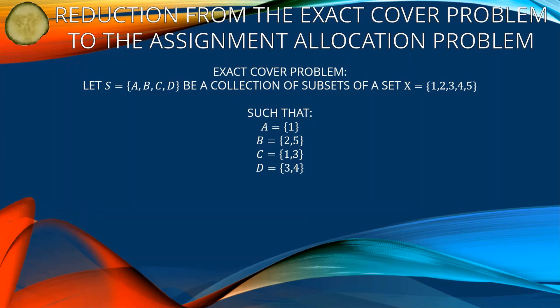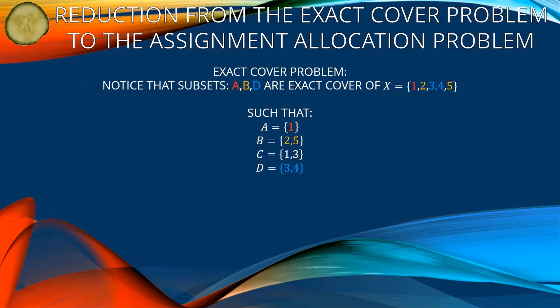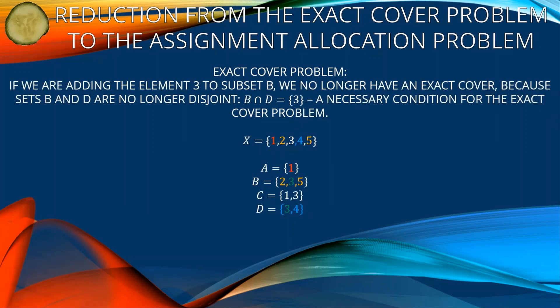Reduction from the exact cover problem to the assignment allocation problem. Exact cover problem: let s = {a, b, c, d} be a collection of subsets of set X = {1, 2, 3, 4, 5}, such that a = {1}, b = {2, 5}, c = {1, 3}, and d = {3, 4}. Notice that subsets a, b, and d are an exact cover of X, because a covers 1, b covers 2 and 5, and d covers 3 and 4. If we add element 3 to subset b, we no longer have an exact cover because sets b and d are no longer disjoint — a necessary condition for the exact cover problem.